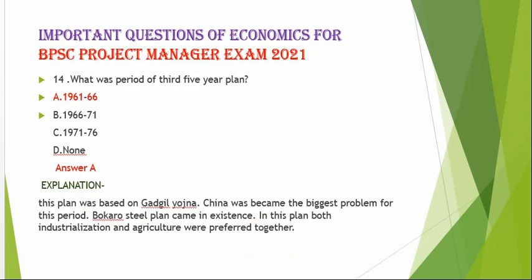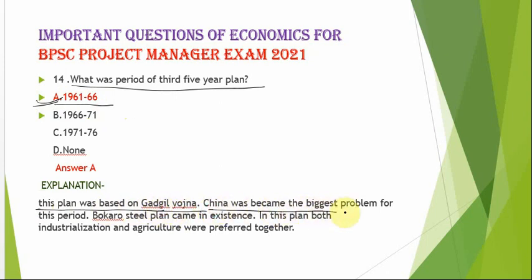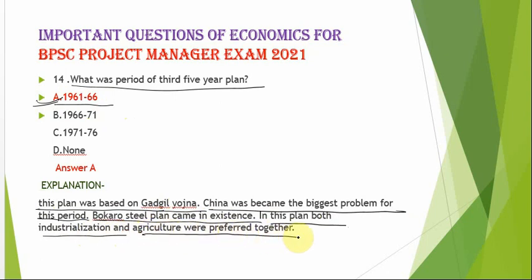The next question is: what was the period of the Third Five Year Plan? The correct option is option A — 1961 to 1966. This plan was based on the Gadgil Yojana. China became the biggest problem during this period. The Bokaro steel plant came into existence. In this plan, both industrialization and agriculture were preferred together.